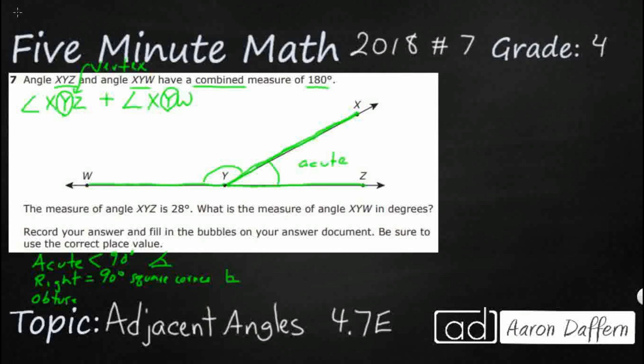So that XYZ is definitely acute. Obtuse is anything greater than 90. And that is definitely what that XYW is. So we're going to call this obtuse. So we know we have an acute, we know we have an obtuse angle. So that gives us a range of less than 90, greater than 90. And they have a combined measure. They equal 180 degrees.